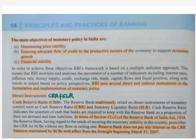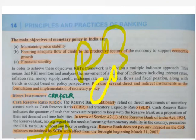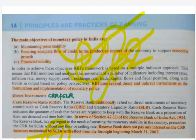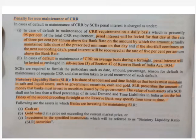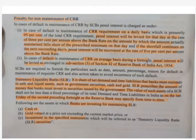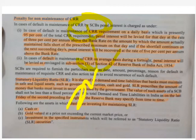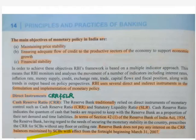Scheduled commercial banks — those banks included in the second schedule of the RBI Act 1934 — are required to maintain CRR. A possible exam question: which of the following are mandatory as per RBI to maintain the CRR? Options may include cooperative banks, primary credit society, RRB, and scheduled commercial banks. The answer is scheduled commercial banks — they are mandatory according to RBI to maintain the CRR.